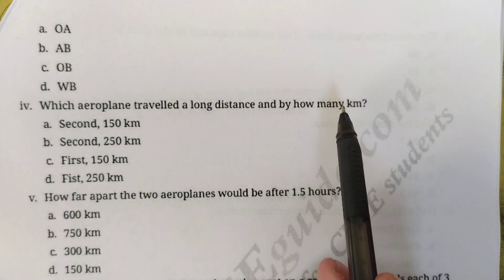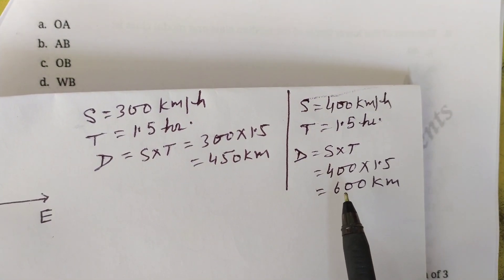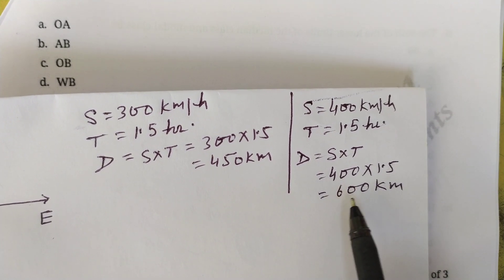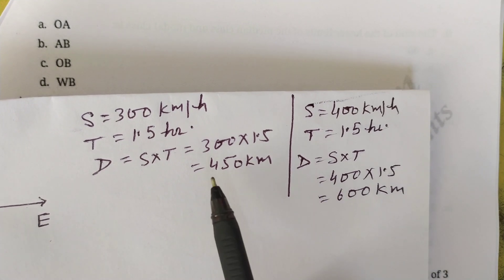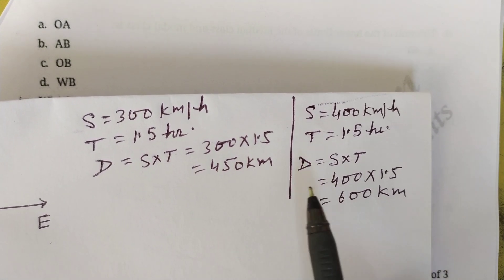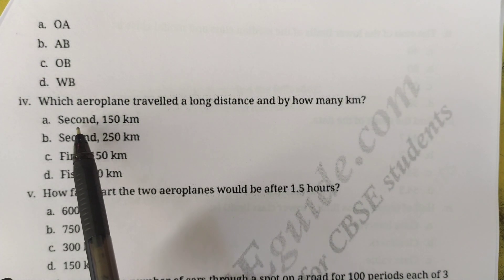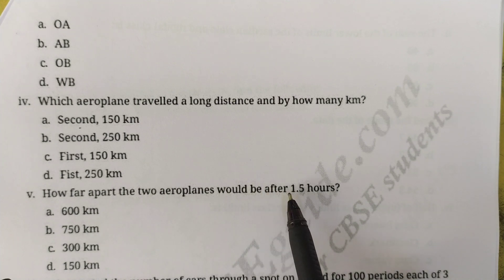The fourth question asks which aeroplane traveled a longer distance and by how much. The first aeroplane traveled 450 km and the second traveled 600 km, so the second aeroplane traveled more. The difference is 600 − 450 = 150 km more. So option A — second aeroplane by 150 kilometers — is correct.